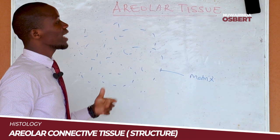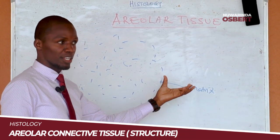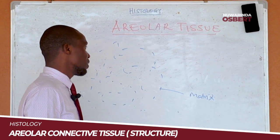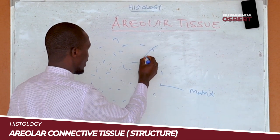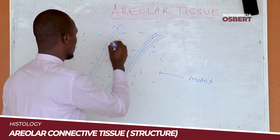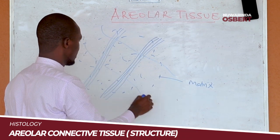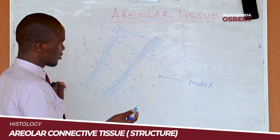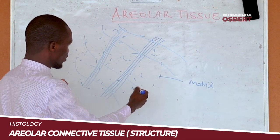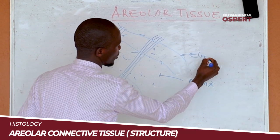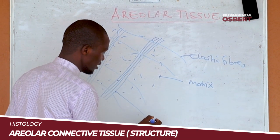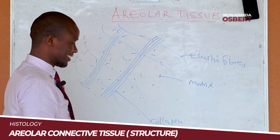Beginning from the fibers: we have fibers which are scattered or spaced apart — these are the elastic fibers. And then we have fibers which are compact and close to each other — these are called collagen fibers. Those are the two categories of fibers found within the areola tissue.